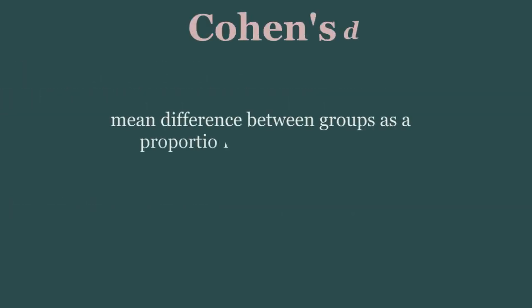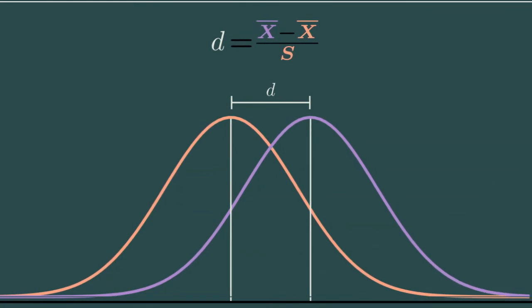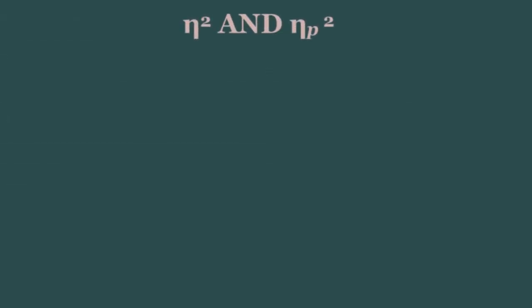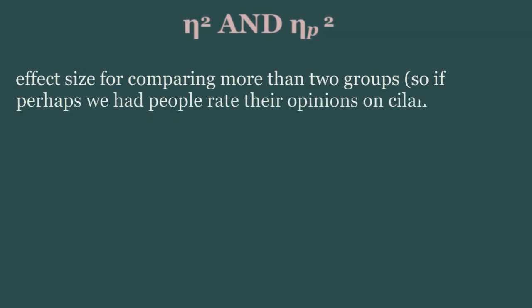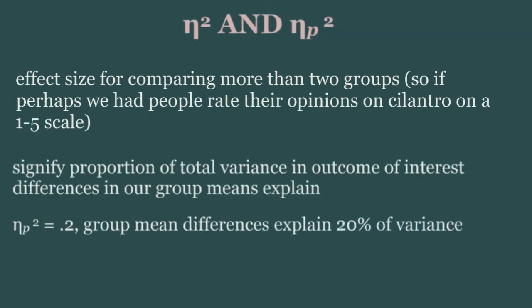When comparing two groups, we often use Cohen's d to measure effect size. Cohen's d signifies the mean difference between our two groups as a proportion of their pooled variance. For example, a Cohen's d of 0.5 means that our two group means are half a standard deviation apart. However, when we are comparing more than two groups, we tend to use eta squared and partial eta squared. Both signify the proportion of total variance in our outcome of interest that is explained by the difference between our various groups. So if we get a partial eta squared of 0.2, then the differences between our groups explain 20% of the total variance in our outcome of interest.